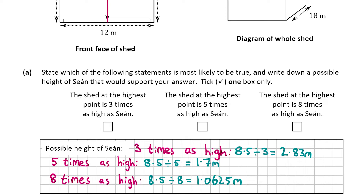Now we have to work out which is most likely to be Sean's height: 2.83 meters, 1.7 meters, or 1.0625 meters. If you know your own height, you can probably guess it's going to be closer to 1.7 meters. No one has ever been as tall as 2.83 meters, and 1.0625 meters would be quite small. So Sean's height must be 1.7 meters, meaning the shed at its highest point is five times as high as Sean.